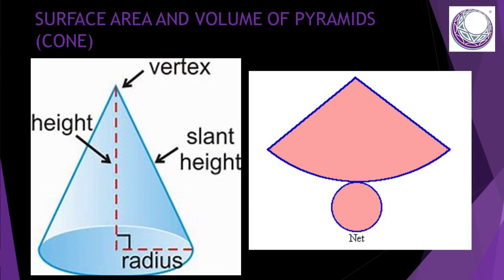Starting with our cone — we always need the vertical height. In calculating the volume, we need the vertical height and the radius. But in calculating the surface area, that's when we need the slant height. These three measurements — radius, vertical height, and slant height — form a right-angled triangle, which means if any two are given, we can always calculate the third using the Pythagorean theorem. In the core component, all measurements are generally given, and the formula is provided — all you need to do is substitute.